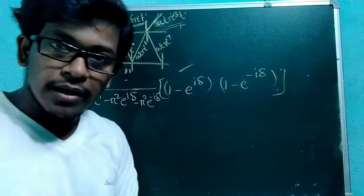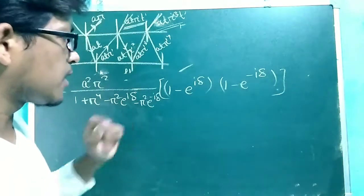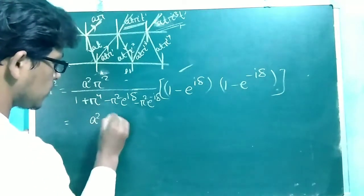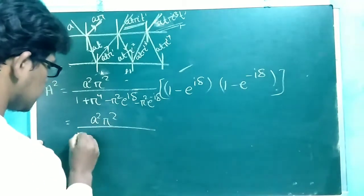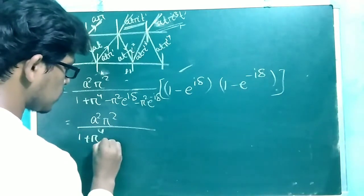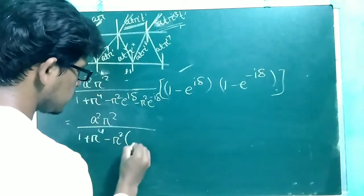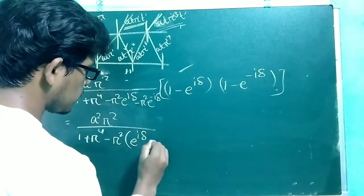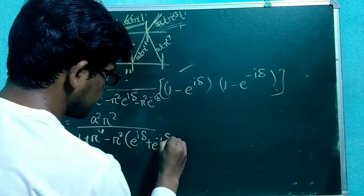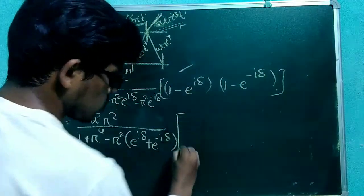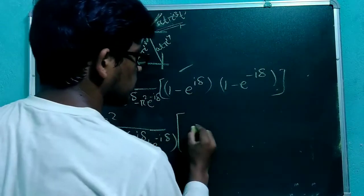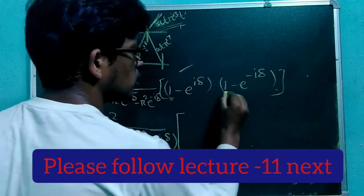After solving and multiplying those two expressions you will get A²R² as usual, then 1 plus R⁴, and taking R² common, we get R²·(e^(iδ) + e^(−iδ)), which leads to a simplified expression involving the cosine of delta.